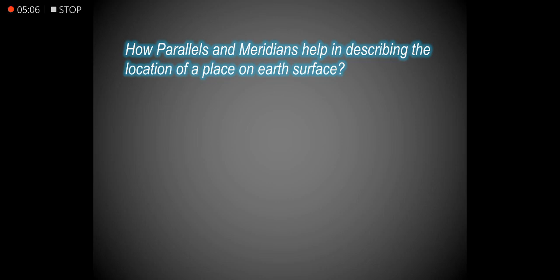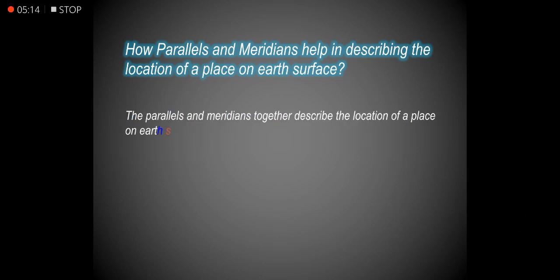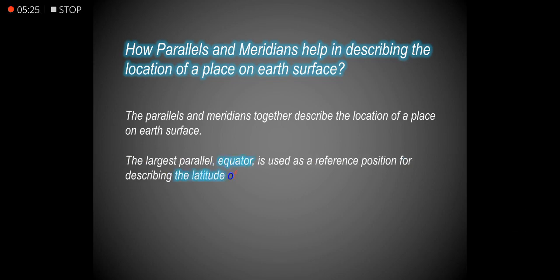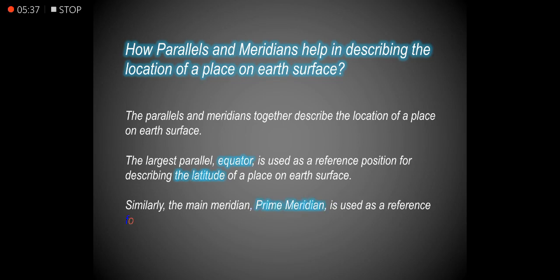The parallels and meridians together describe the location of a place on the Earth's surface. The largest parallel, the equator, is used as a reference position for describing the latitude of a place. Similarly, the Prime Meridian is used as a reference for describing the longitude of a place on the Earth's surface.